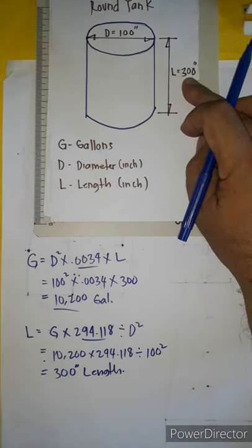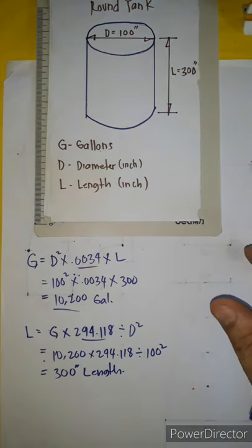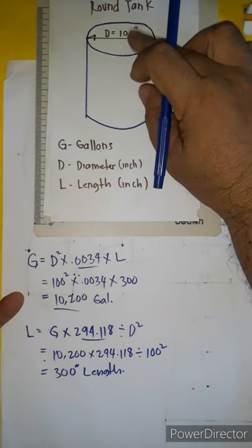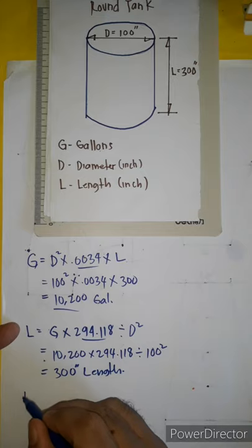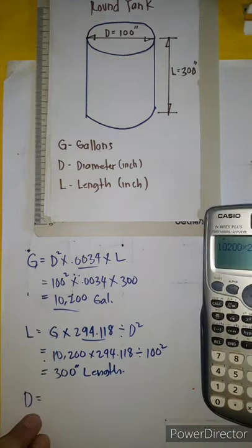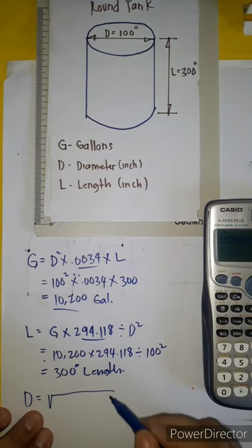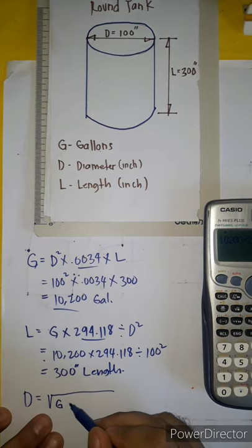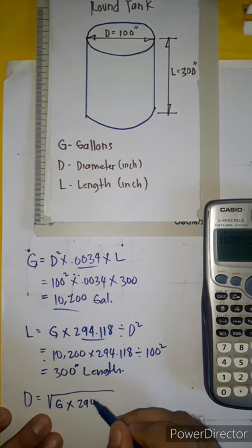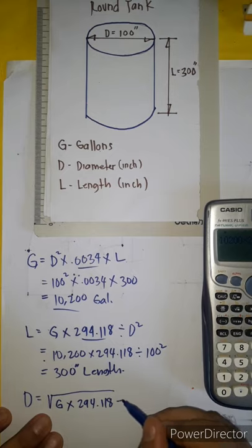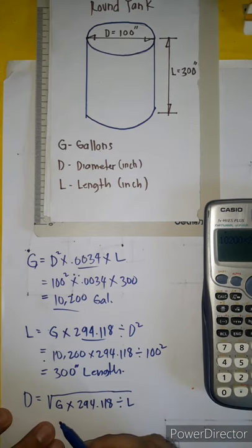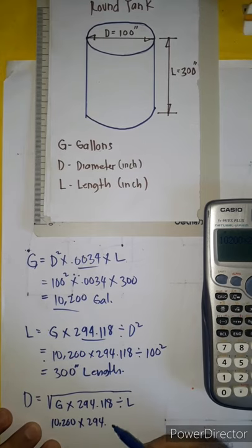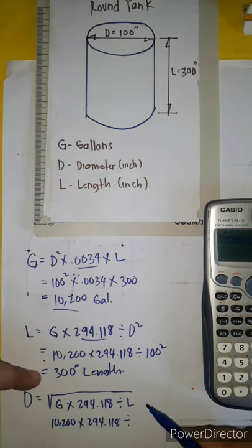Now, what if we don't know the diameter? If the given values are gallons and length, use this formula: Diameter equals the square root of gallons times the constant 294.118, divided by the length. Substituting our values: square root of 10,200 times 294.118, divided by 300.